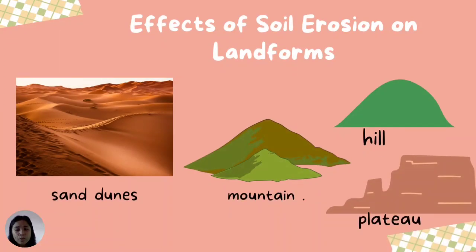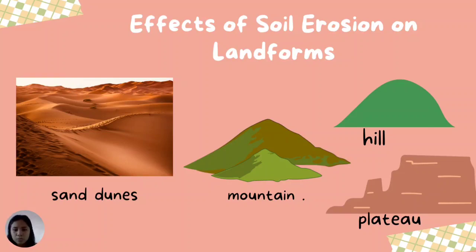Although soil erosion happens continually, the appearance and structure of a landform do not change overnight. It would take hundreds of years to change. For instance, sand dunes form after plenty of soil accumulates into a huge mass after existing large masses of rocks and soil. This process happens over and over again. Soil erosion can destroy large masses of land, and it can also transform a mountain into a hill or plateau.